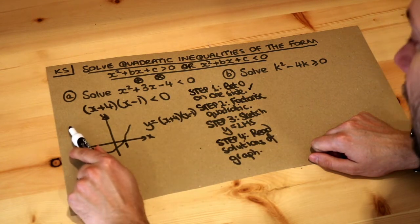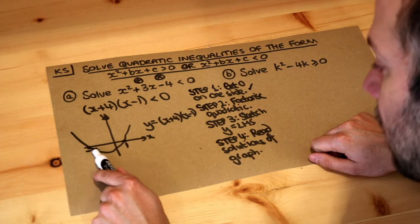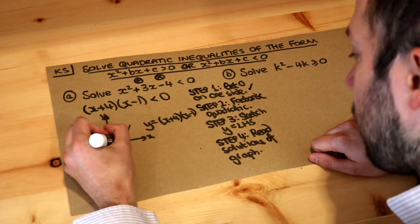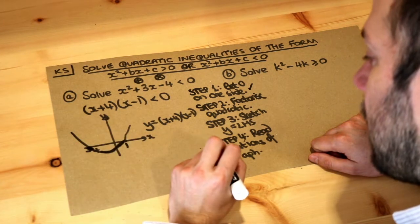So we look on our graph, where on this line is the y value less than zero. Well we can see in this bottom bit, that's where the y value, not the x value, the y value is less than zero. So I'm going to highlight that bit of the line.